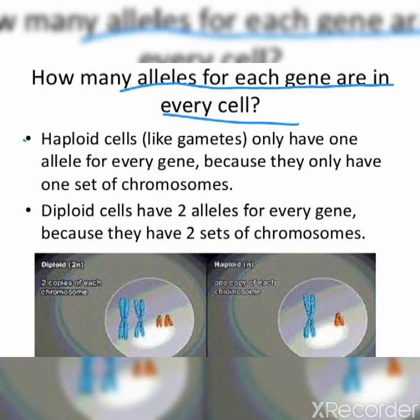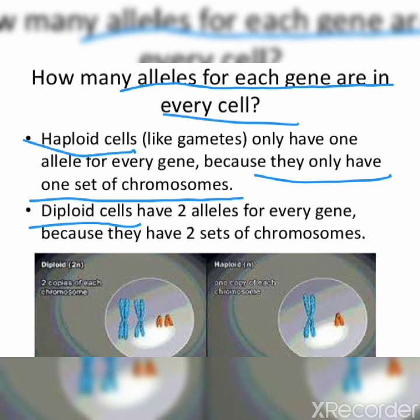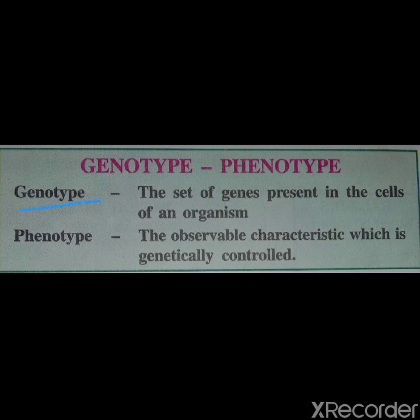How many alleles for each gene are in every cell? Haploid cells like gametes only have one allele for every gene because they only have one set of chromosomes. In meiosis, chromosome number is halved in gametes. During fertilization, when male and female gametes fuse, the normal diploid number is restored. Diploid cells have two alleles for every gene — one from mother and one from father.